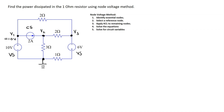This means the voltage at node 1 is actually 10 volts, and we do not need to apply Kirchhoff's current law to this node. This is a consequence of a good choice of reference node. Let's now apply Kirchhoff's current law to the remaining nodes.